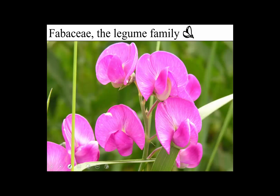To summarize the fabulous Fabaceae: unicarpellate gynoecium matures into a legume; lovely papillionaceous symmetry; petals with special names — the standard, the wings, and the keel, which has a little fusion at the tip.